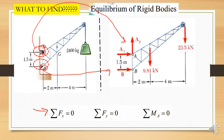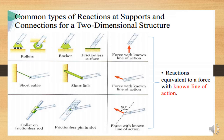For example, we know the load is applied here so the force points downward. This is the center of gravity of the crane, so the weight of the crane is located here due to gravity. This table shows the common reactions at supports and connections for two-dimensional structures. For example, if the diagram shows a roller, rocker, or frictionless surface, there will be a force with a known line of action pointing 90 degrees to the surface it touches.